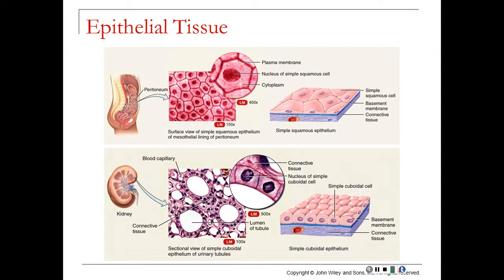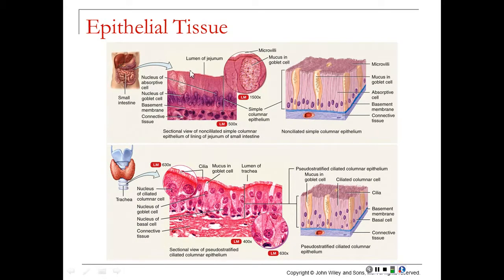Looking at specific examples: the peritoneum lining the abdominal cavity is a serous membrane made of simple squamous epithelium — a single layer of cells attached to a basement membrane. Notice a blood vessel within the basement membrane, because the epithelial layer itself has no blood vessels. Within the kidneys, tubules are lined with simple cuboidal epithelium — one cell layer thick with cube-shaped cells attached to a basement membrane.